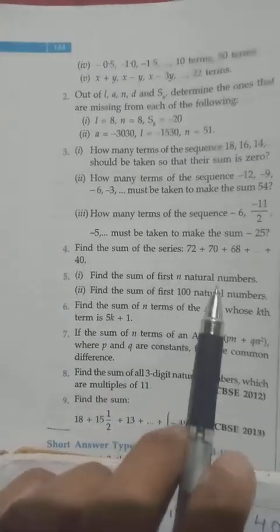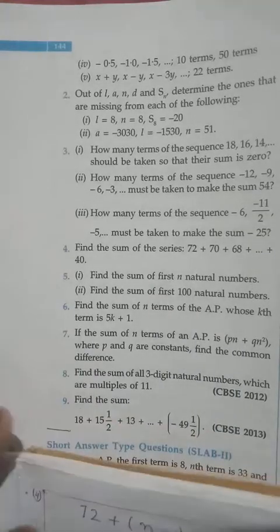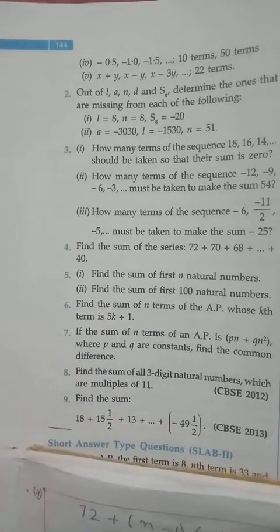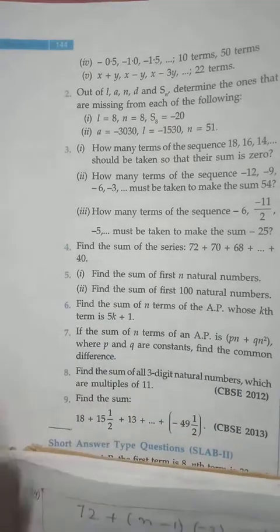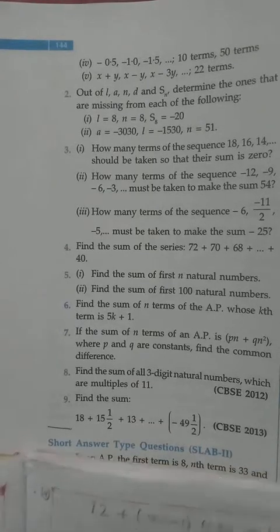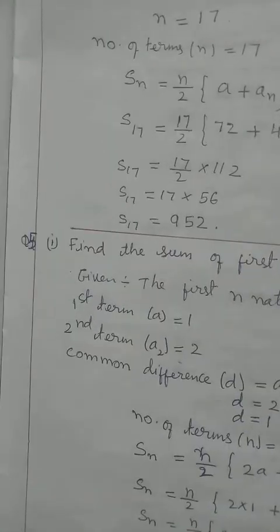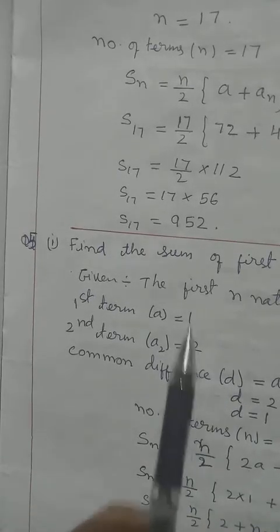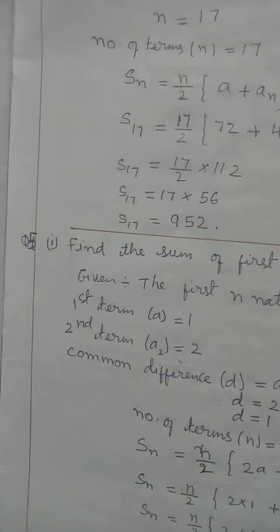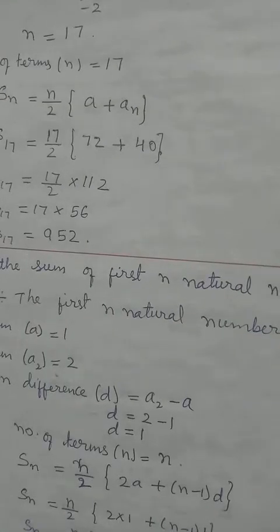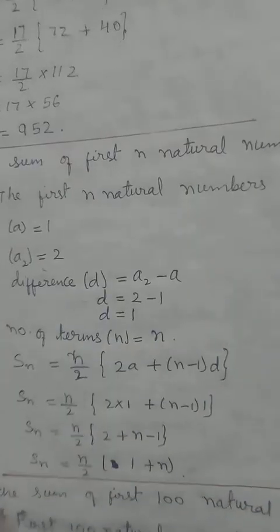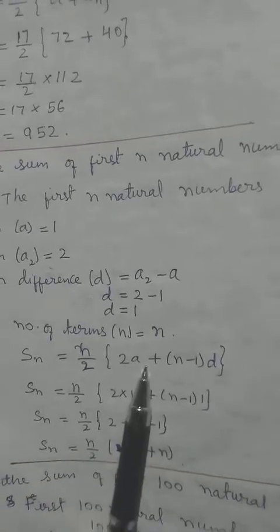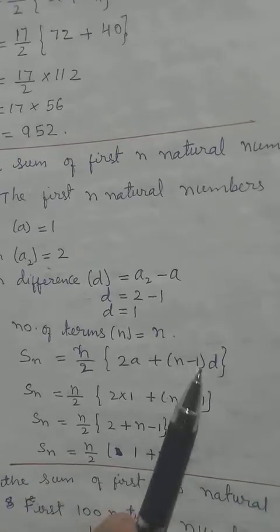Question 5: find the sum of the first N natural numbers. Natural numbers are counting numbers 1, 2, 3, 4, 5... up to N. Since they say 'first,' we start from 1. The first term is 1, the second term is 2, common difference is 2 − 1 = 1. We don't know the last term, so we use the first-type formula: S_N = N/2 × [2A + (N−1)D].